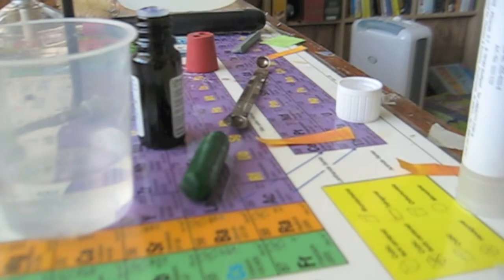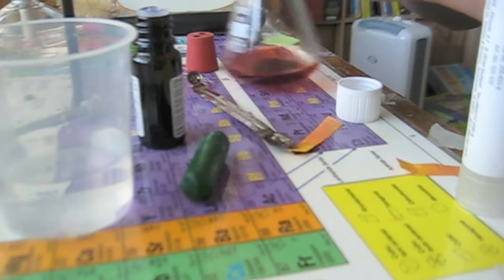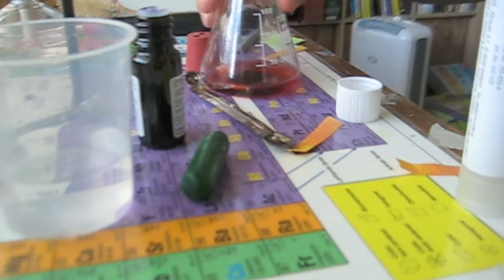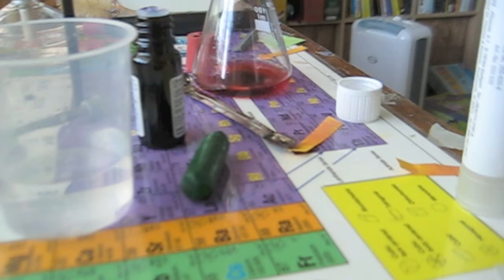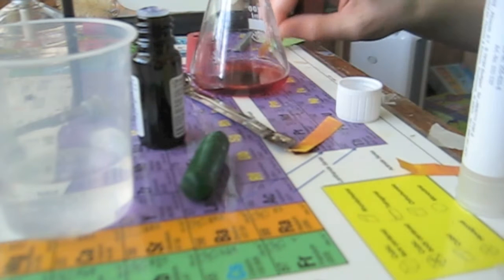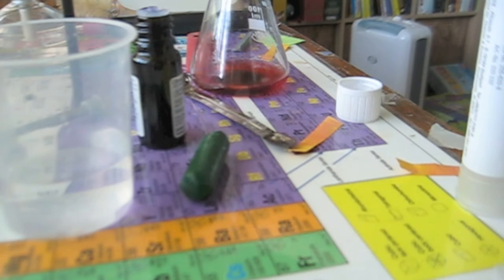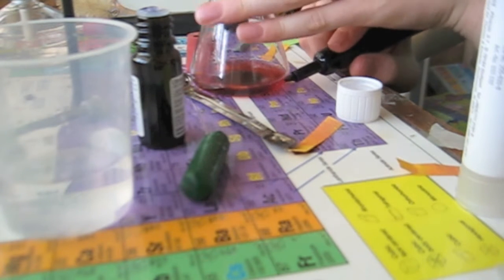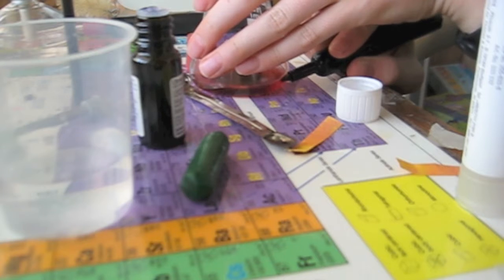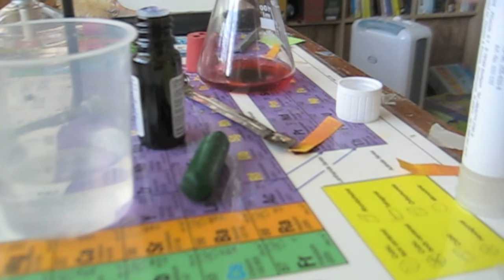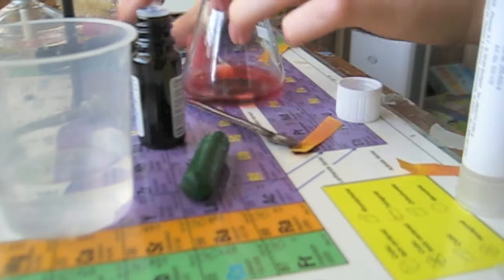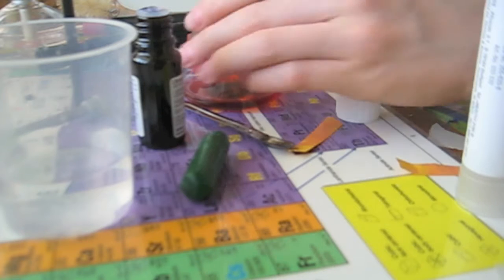I'm going to place this here and record the amount. We're going to draw a line on here. Now that we have it marked, we can go ahead and drip in the sodium bicarbonate solution.